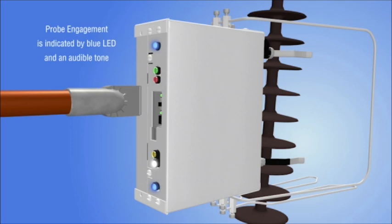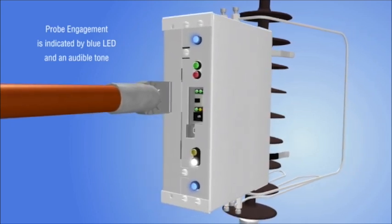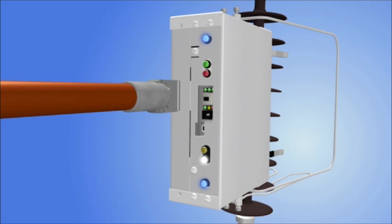Probe engagement is indicated by a blue LED in line with each probe and an audible tone. Each probe has a different tone associated with it. Both of the blue LEDs need to be lit in order to begin a measurement. When both probes are simultaneously engaged, a measurement will start, indicated by a steady tone and a continuous amber LED. A measurement takes about one second. The probes must not be removed during this time or an invalid measurement will result.